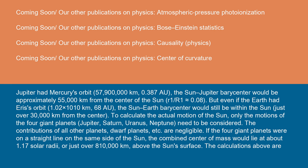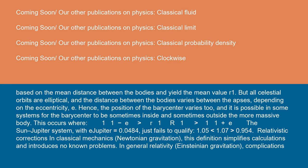The calculations above are based on the mean distance between the bodies and yield the mean value R1. But all celestial orbits are elliptical, and the distance between the bodies varies between the apses, depending on the eccentricity e.